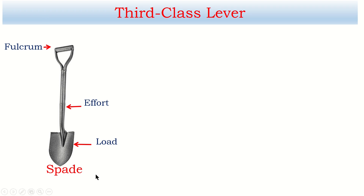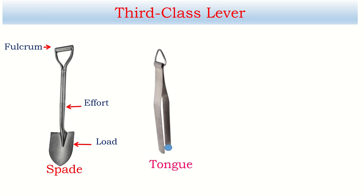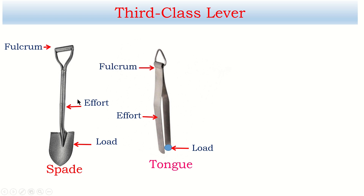We throw the soil or sand to a certain place — that's how the spade works. The effort is acting in between the fulcrum and the load, so a spade is a third class lever. Another example is tongs: the load is at one end, effort is applied in the middle, and the pivot end doesn't move, so effort is in between the fulcrum and the load.